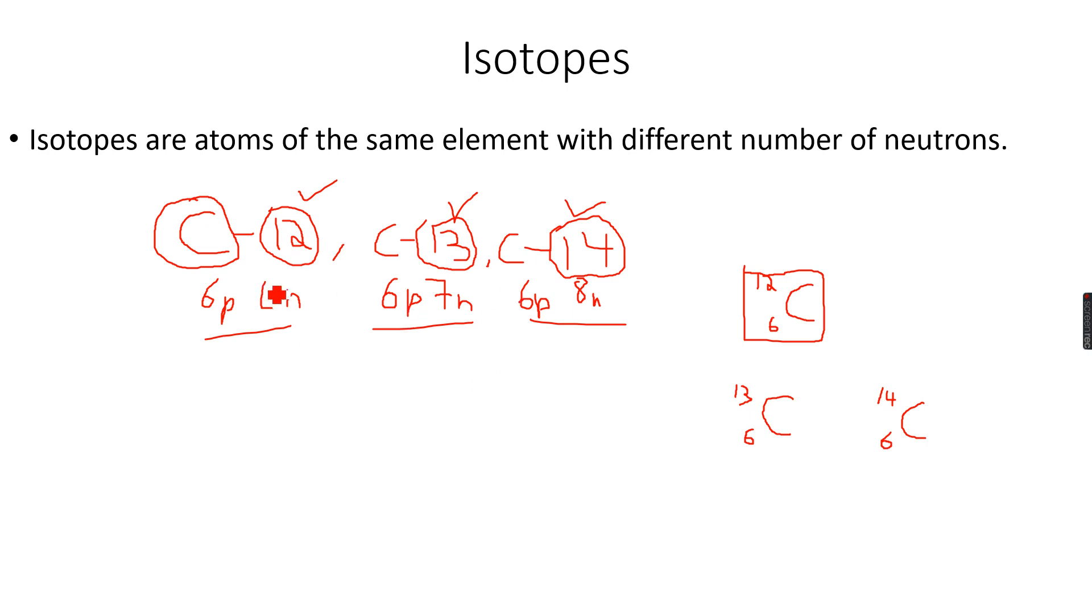So because of the difference of neutrons, these are called isotopes and the difference of neutrons causes a difference in relative atomic mass or nucleon number.